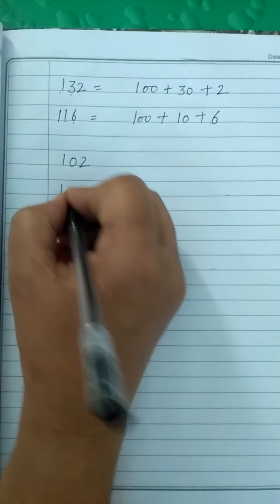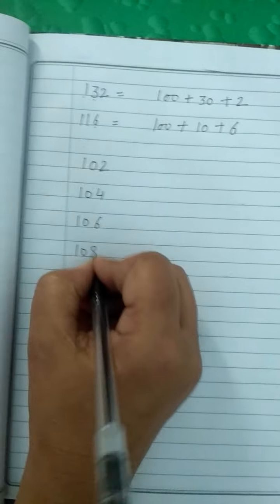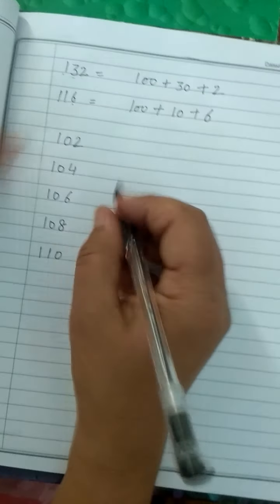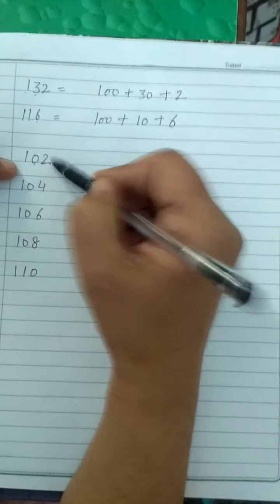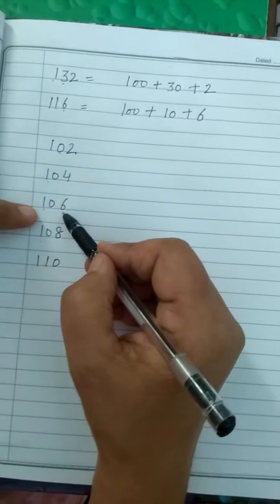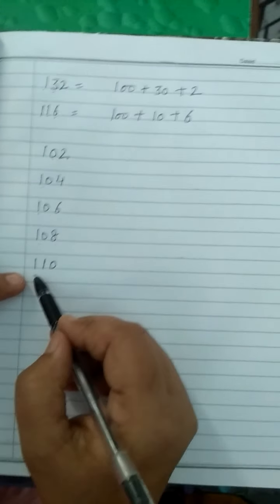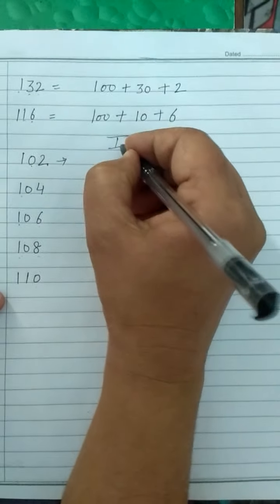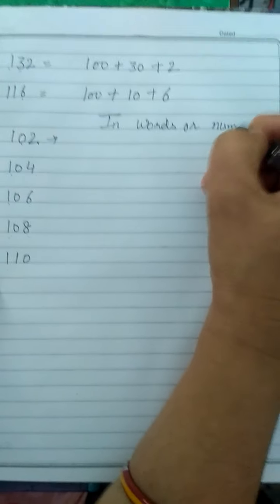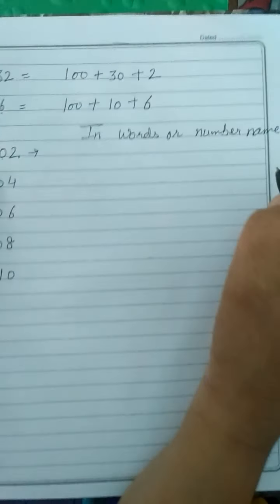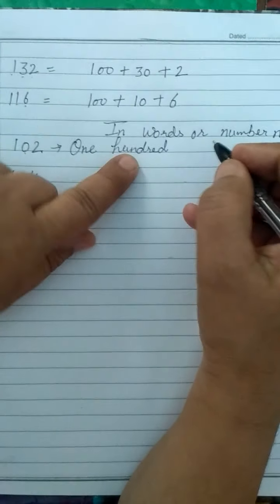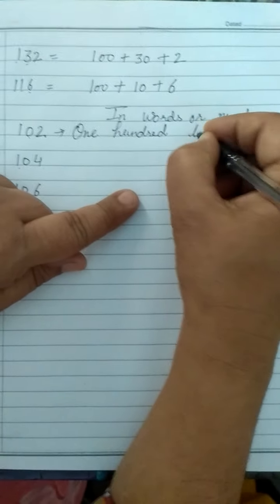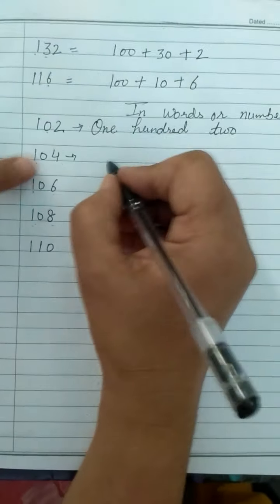Now again we will do some numbers. Try to read these numbers. At the ones and tens space there is no number, so we will read it: one hundred two, one hundred four, one hundred six, one hundred eight, one hundred ten. You can write these in words. One hundred and six is at ones — you can write 102 and 104 in words also.